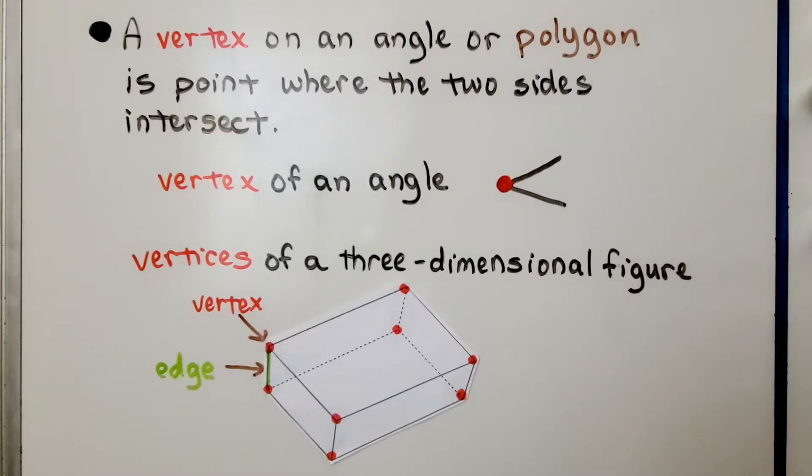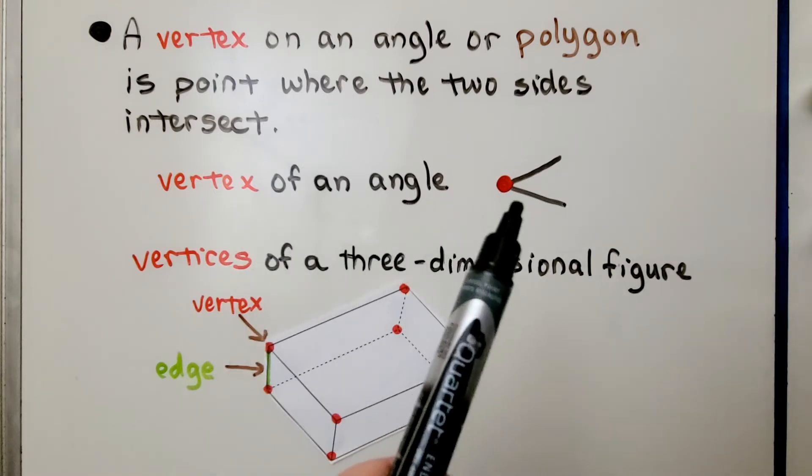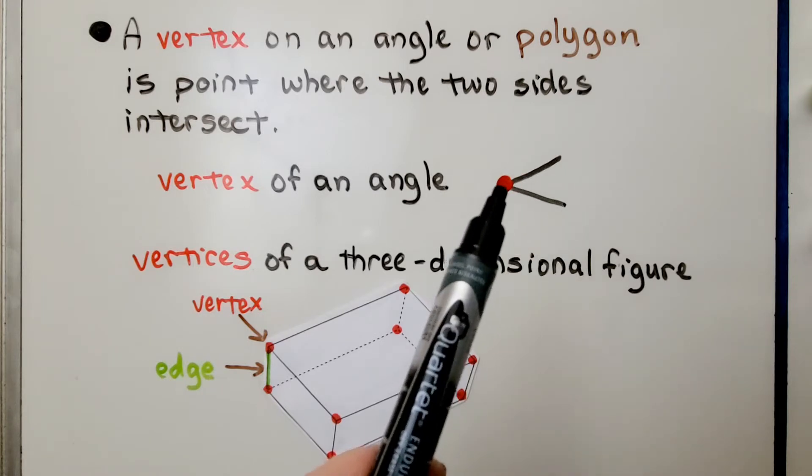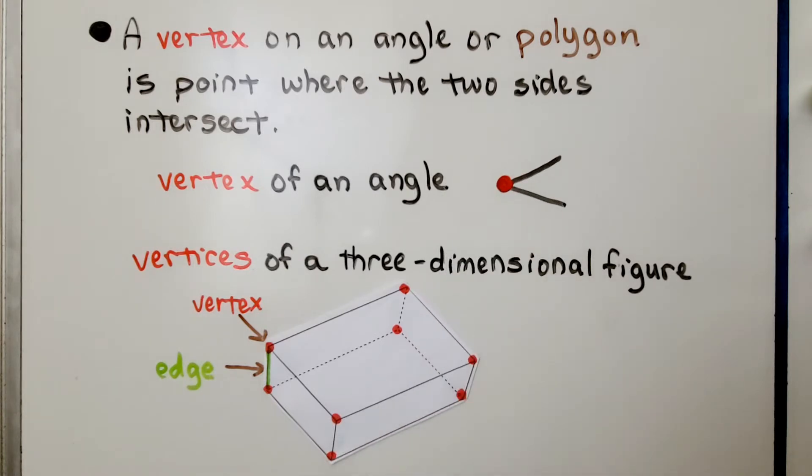A vertex on an angle or polygon is the point where the two sides intersect. The vertex of an angle is right here, where this line and this line intersect. The vertices of a three-dimensional figure are these corners.